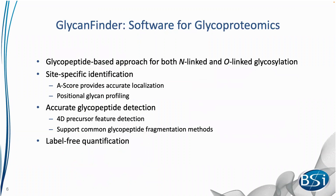This is the reason why we've developed GlycanFinder — a software for glycoproteomics. It takes a glycopeptide-based approach for both N-linked and O-linked glycosylation. We can identify the site of glycosylation and provide confidence to the user that it's the correct site using an A-score value. GlycanFinder does accurate glycopeptide detection, can use 4D precursor feature detection, and supports common glycopeptide fragmentation methods such as HCD, ETHCD, and CID. We can also perform label-free quantification to compare abundance of glycopeptides across different samples.